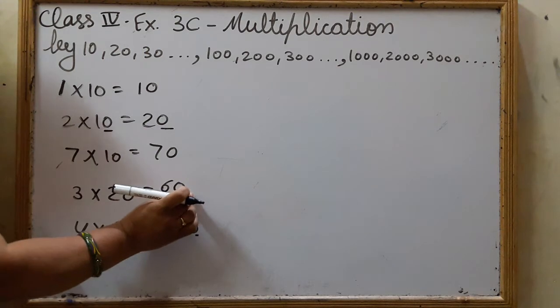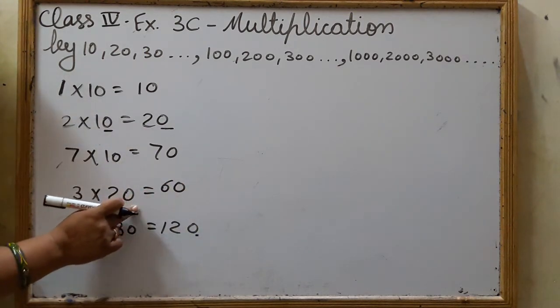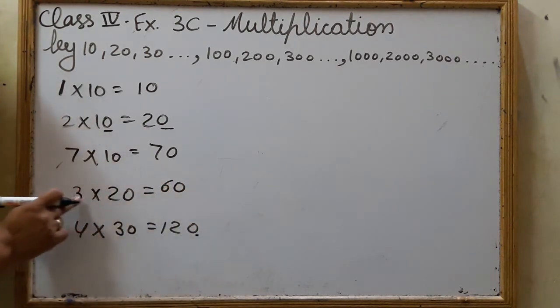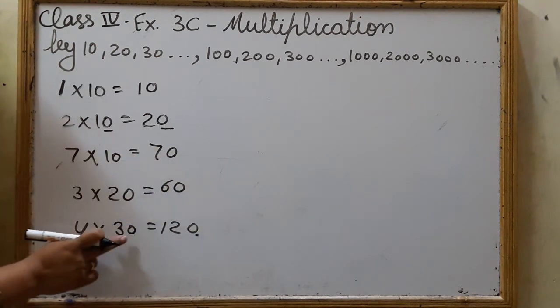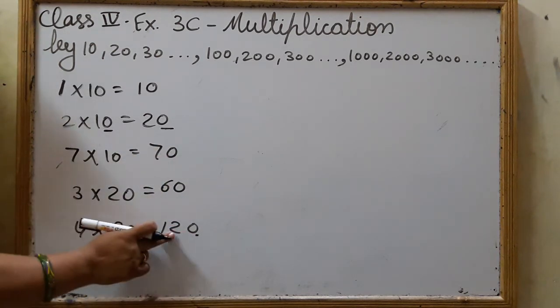Zero will always be put on 1's number. Here zero is on 1's number. So we will write zero here and 3 2s are 6. See, here also zero is there and 3 4s are 12.